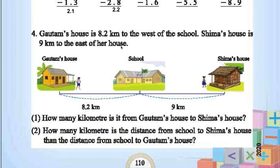Gautam's house is 8.2 km to the west of the school. Shema's house is 9 km to the east of the school. How many km is it from Gautam's house to Shema's house? 8.2 plus 9 equals 17.2 km. That is the answer for the first part.